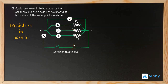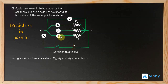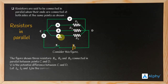Looking at this diagram, here are points C and D. The figure shows three resistors R1, R2, and R3 connected in parallel between points C and D. V is the potential difference between C and D. Let I1, I2, and I3 be the currents flowing through resistors R1, R2, and R3 respectively.